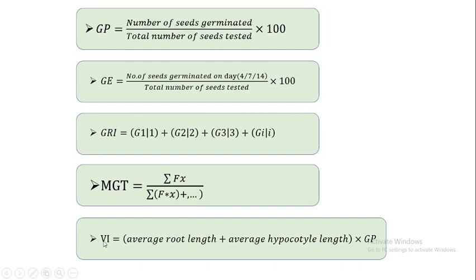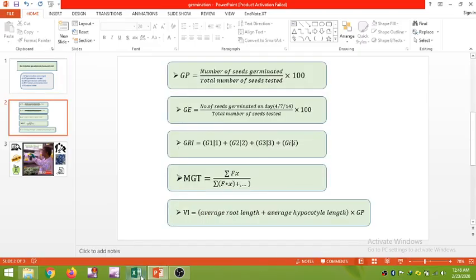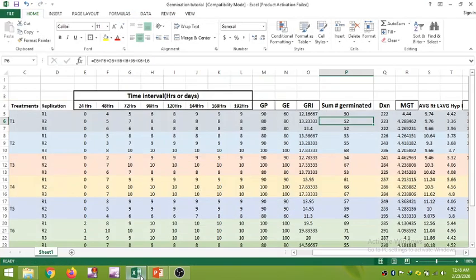The fifth one is the vigor index. This is calculated as: average root length of the seedling plus average hypocotyl length of the seedling, multiplied by germination percentage. This will give you the vigor index.